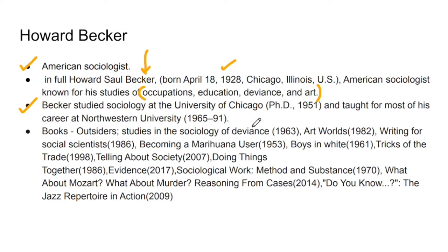The theory we are going to study today is Labeling Theory. He studied sociology at the University of Chicago, and after that he taught at Northwestern University. He has quite a lot of books — I couldn't add all of them here, many are missing. So you should go to Google, look up his books, and make a list of them. You should know all the book names with their years, because exam questions are framed this way, especially for objective paper preparation.